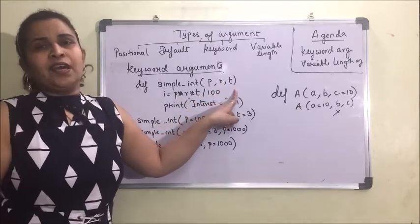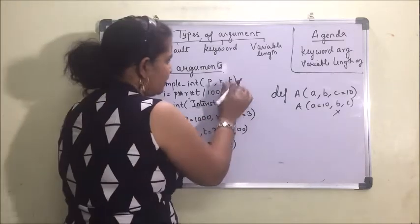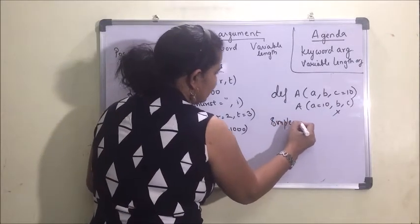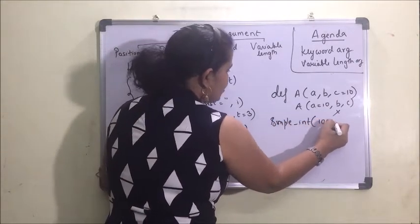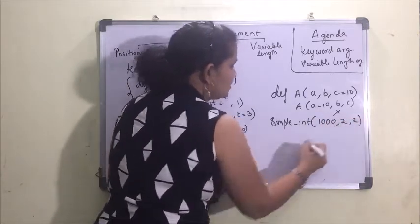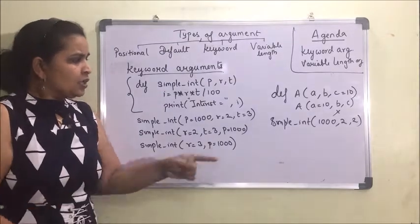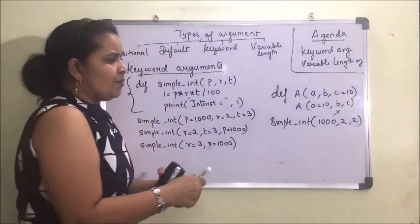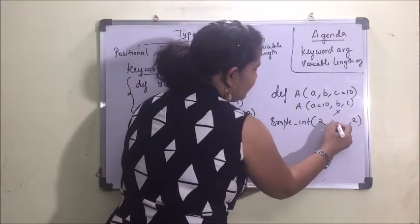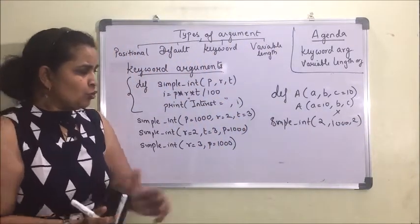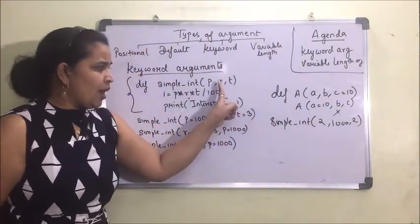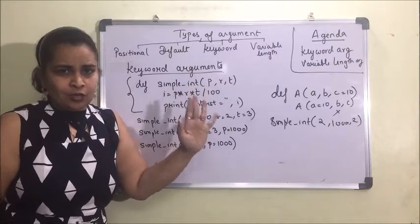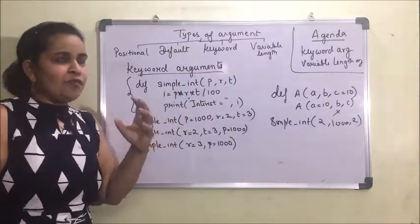If we are calling the simple interest function as simple_interest(1000, 2, 2), the position of principle, rate, and time matters. If we change the order and pass 2, 1000 instead, then 2 will go to principal, 1000 will go to rate, and 2 will go to time. The same issue occurs with default arguments — position always matters.